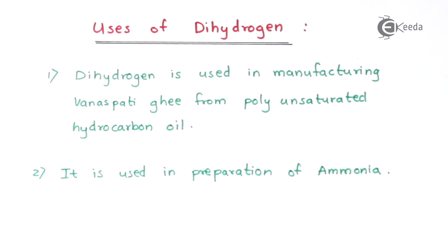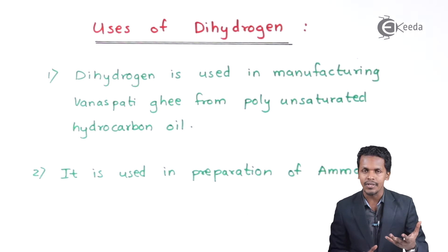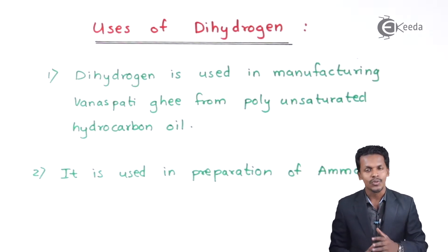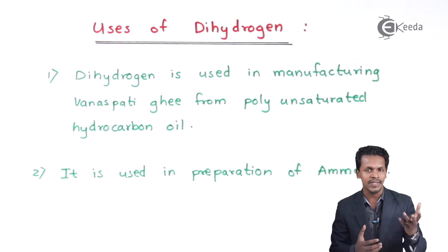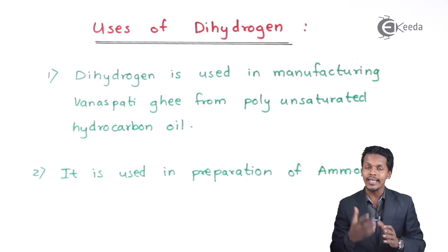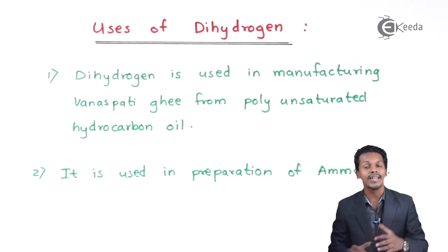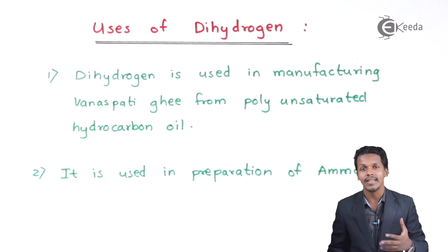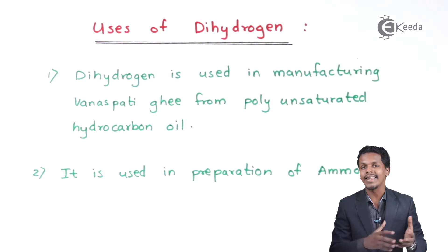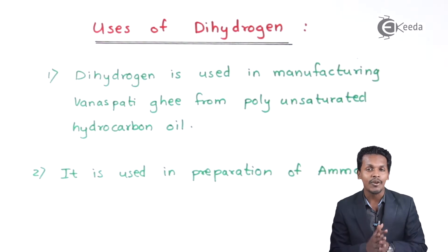The second point is that hydrogen is used in the preparation of ammonia. As discussed earlier, hydrogen reacts with nitrogen via Haber's process. When a nitrogen molecule is treated with hydrogen molecules in the presence of certain catalysts, ammonia is formed. This ammonia is used not only as a base in chemical reactions but also in making fertilizers.